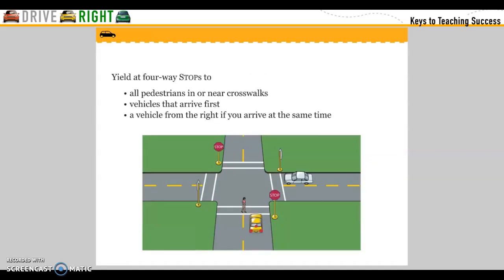Yield at four-way stops to all pedestrians in or near crosswalks, to vehicles that arrive first, and to a vehicle from the right if you arrive at the same time.